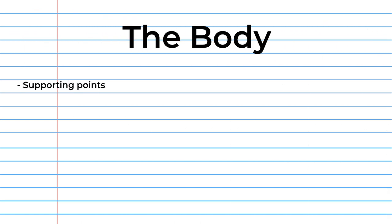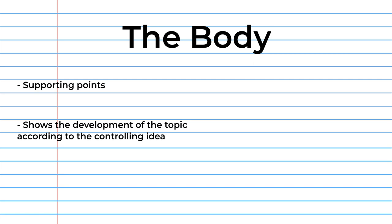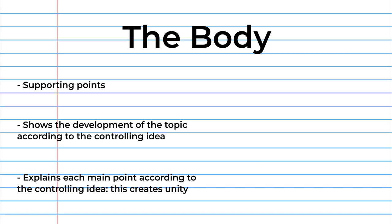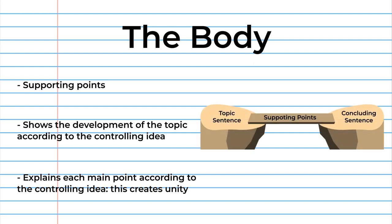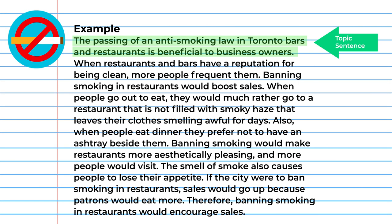The body of the paragraph provides supporting points, shows the development of the topic according to the controlling idea, and explains each main point according to the controlling idea. There are three supporting points in the body.